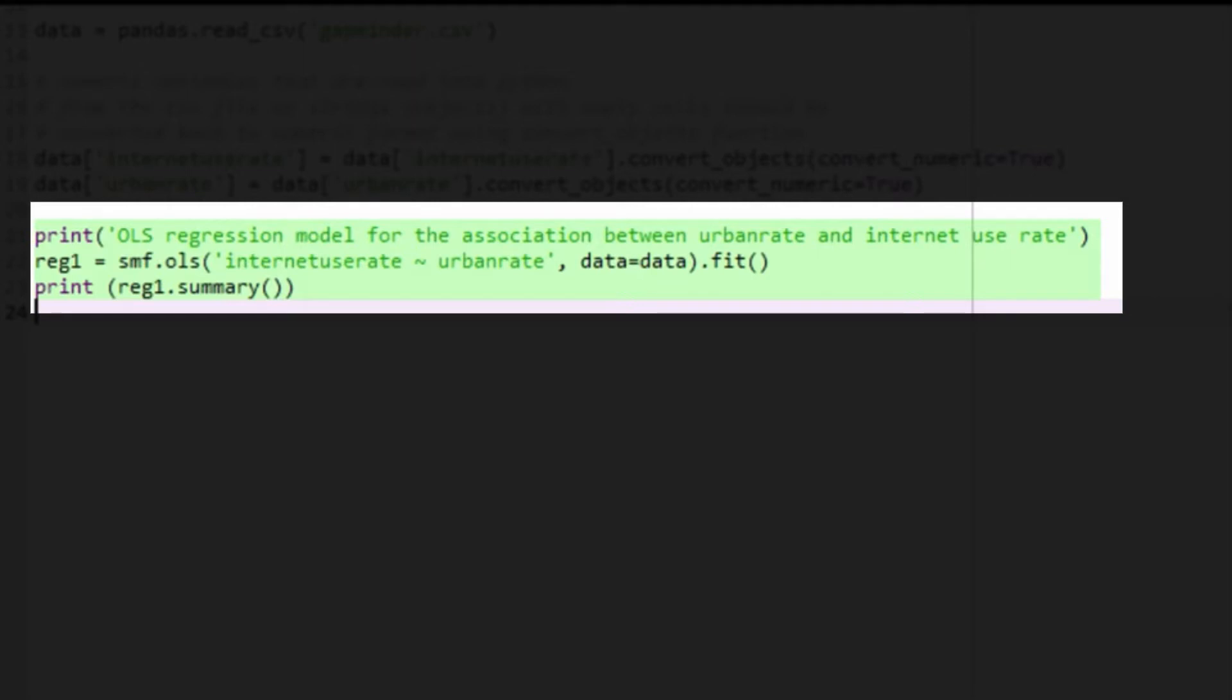We give the object that will be produced by the OLS function the name reg1, followed by an equal sign. After the equal sign, we include smf.ols. Within parentheses, I then write my formula, the name of my quantitative response variable, internet use rate, followed by a tilde and the name of my quantitative explanatory variable, urban rate.